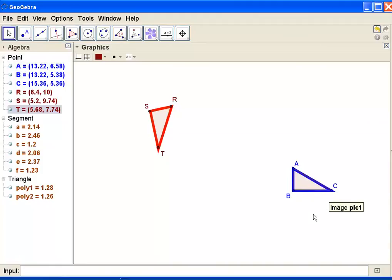First of all, I'm going to look at the orientation. In this triangle, I have ABC. As I go around the triangle, I see that ABC is counterclockwise.